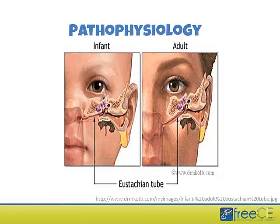Why are infants and children so much more susceptible to acute otitis media than adults? The majority of cases — about 90 to 95 percent — are preceded by a viral upper respiratory tract infection. That viral URI leads to dysfunction of the eustachian tube, making it less effective as a barrier between the external world and the middle ear, allowing bacteria to cause infection.